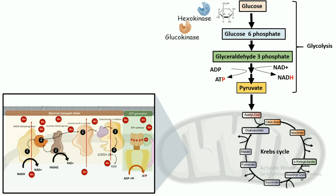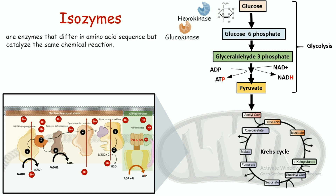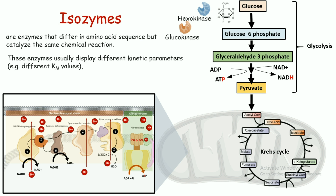Our concern is the phosphorylation of glucose, which takes place with the help of hexokinase or glucokinase depending upon the tissue type. Both can trigger the phosphorylation reaction from glucose to glucose-6-phosphate. These enzymes are known as isozymes — enzymes that differ in amino acid sequence and slightly in structure, but are similar in terms of the chemical reaction they catalyze. They display different chemical kinetics and different regulatory properties.